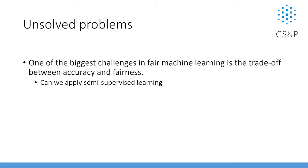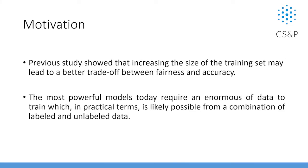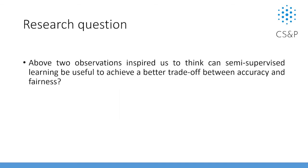Can we apply semi-supervised learning here? The motivation is that previous studies show that increasing the size of the training set may lead to a better trade-off between fairness and accuracy. One way is to increase the training set, but training data for machine learning is quite rare — we need to pay a lot to collect and label it. So is it possible to use unlabeled data during the fairness process? That's the key motivation. We use semi-supervised learning to train on unlabeled data, get pseudo-labels, and use them to improve model fairness.